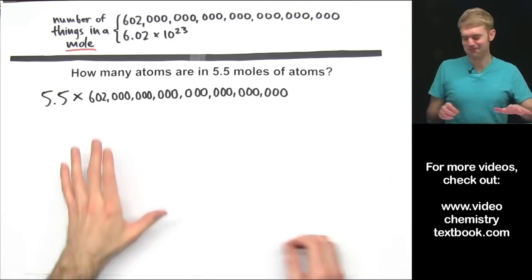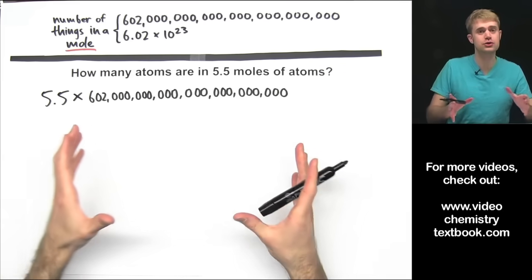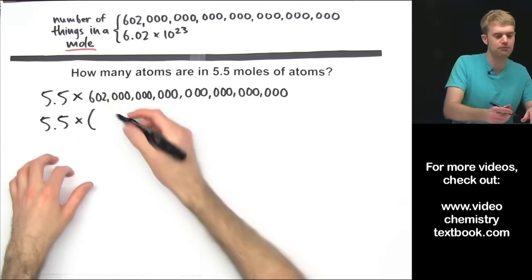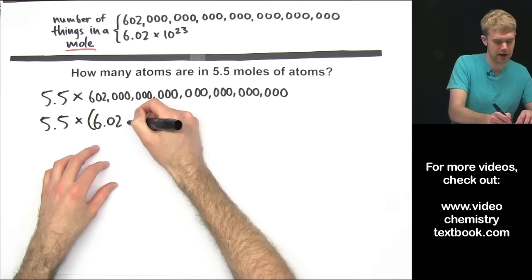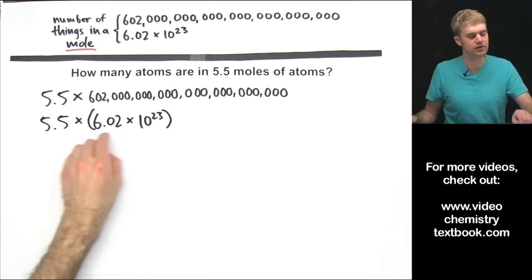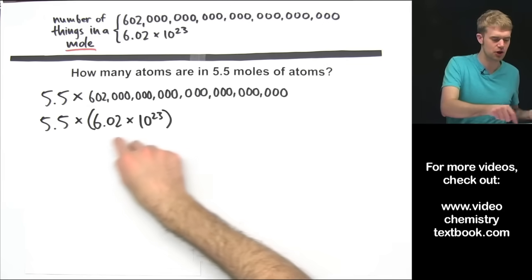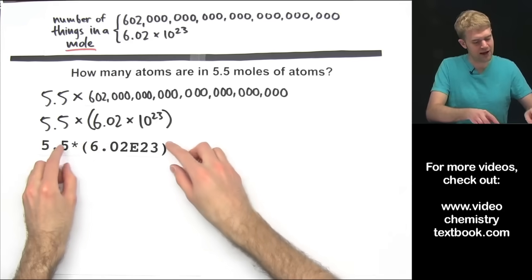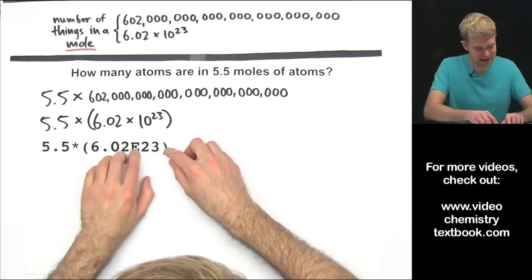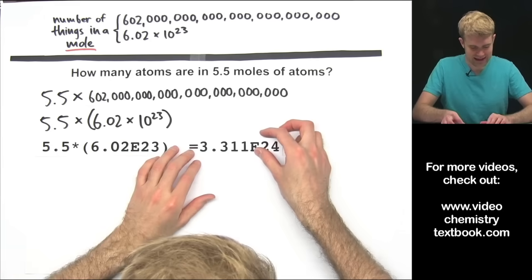This big number with all these zeros is a real pain, so if you're actually going to do this math, you'd want to use the shorter version in scientific notation. So let's take 602 hexillion and write it in the more manageable form of 6.02 times 10 to the 23rd — the same number, just abbreviated. You're going to use a scientific or graphing calculator. Here's how you type it in: 5.5 times 6.02 E23. The E is 10 to the exponent, and 23 is the exponent. Plug this into the calculator and we get our result.